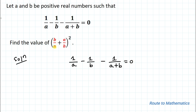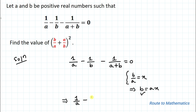We have given 1/a - 1/b - 1/(a+b) = 0. Let's take b/a = x, which implies b = ax. Now let's put the value of b into this equation, giving us 1/a - 1/(ax) = 1/(a + ax).